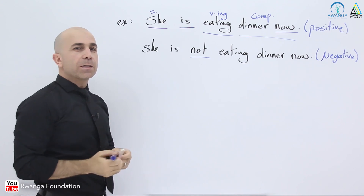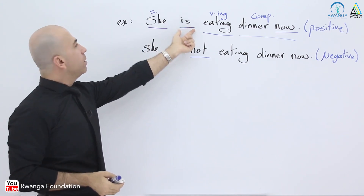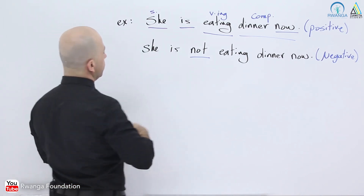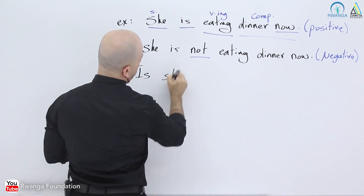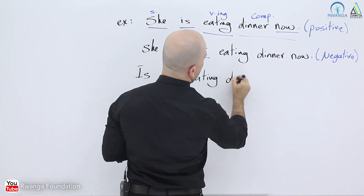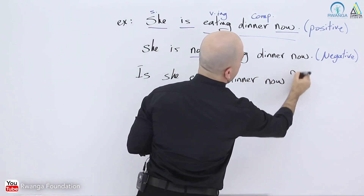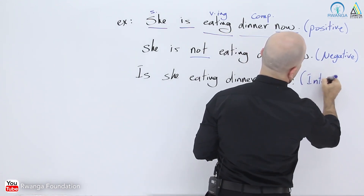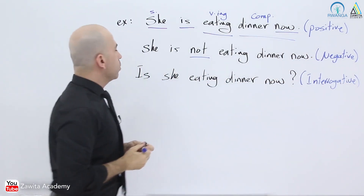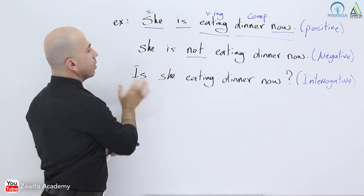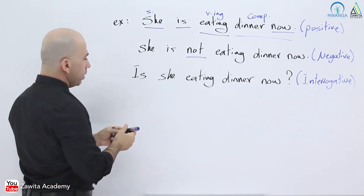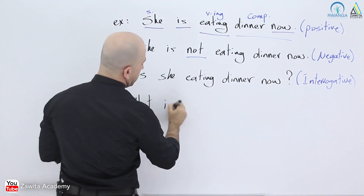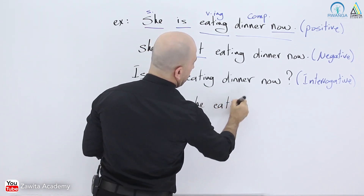Now let's change it to interrogative. We move the helping verb to the beginning: 'Is she eating dinner now?' with a question mark. For the WH question, we add a WH word at the start — for example, using 'what': 'What is she eating now?'